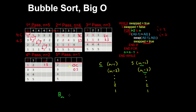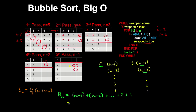Therefore, the number of comparisons is (n-1) + (n-2) + ... + 2 + 1. This is an arithmetic series, which has a sum equal to the number of terms divided by 2, multiplied by the value of the first term plus the last term. For our bubble sort arithmetic series, we have (n-1) terms on 2, and the first term is (n-1) plus the final term 1. These cancel, so we obtain (n-1) × n / 2 comparisons.